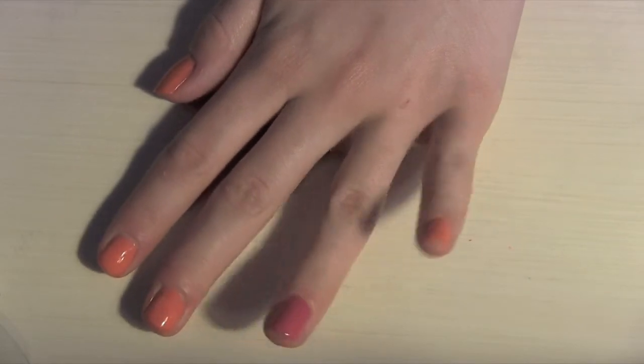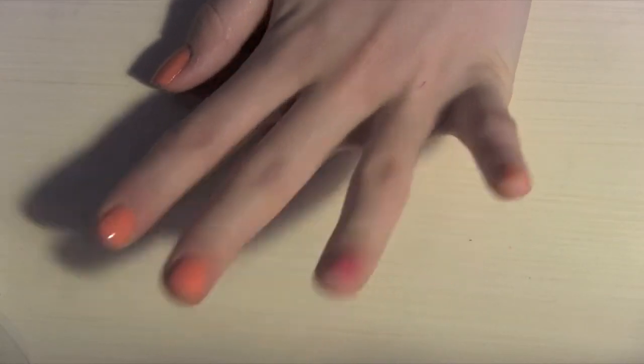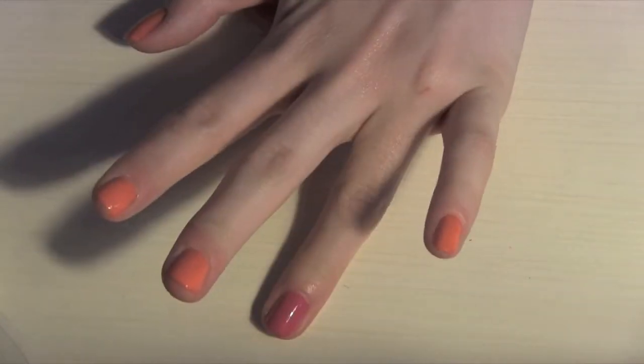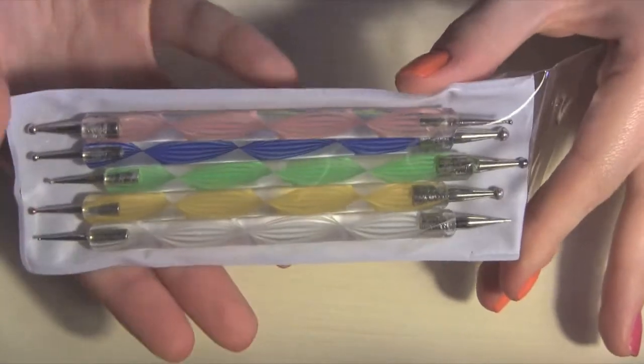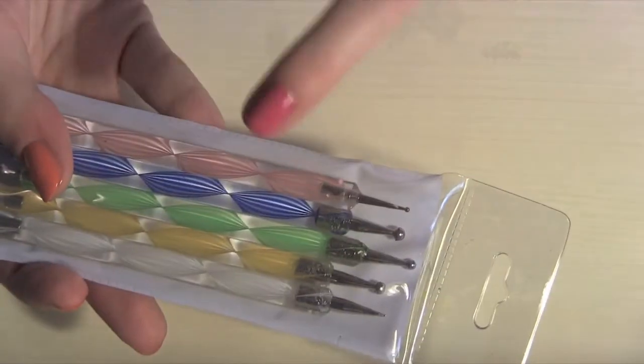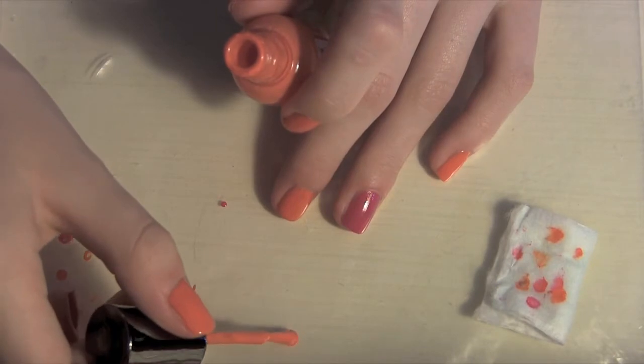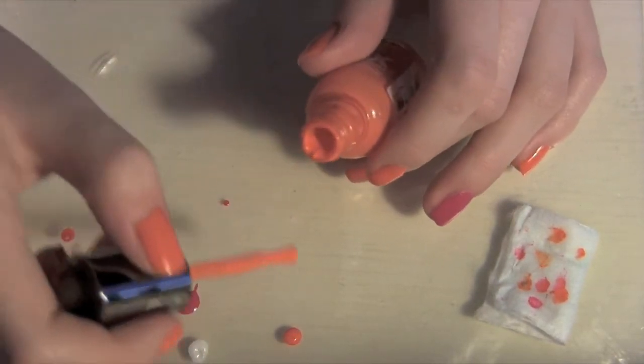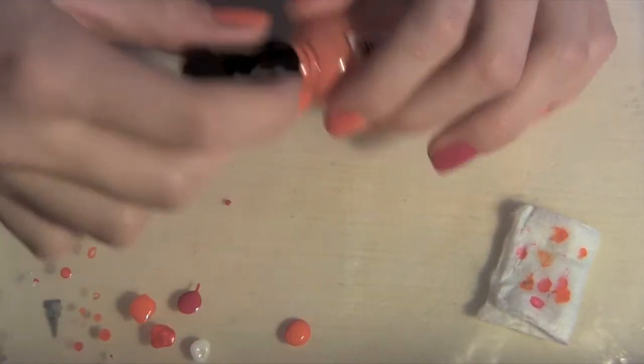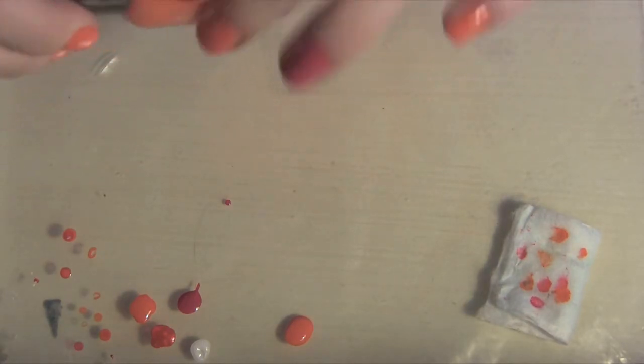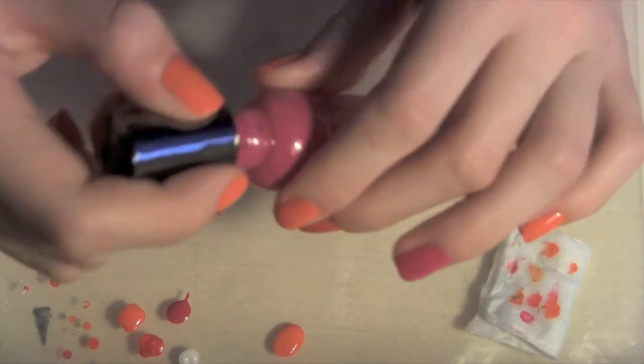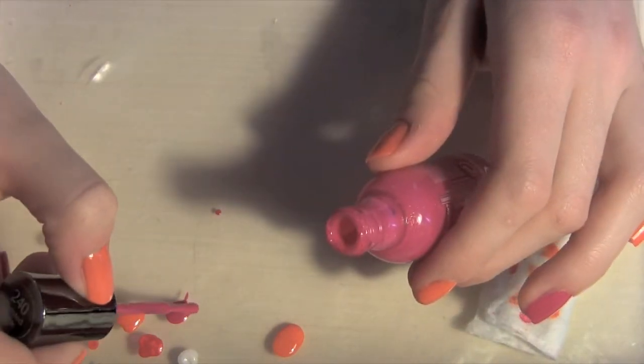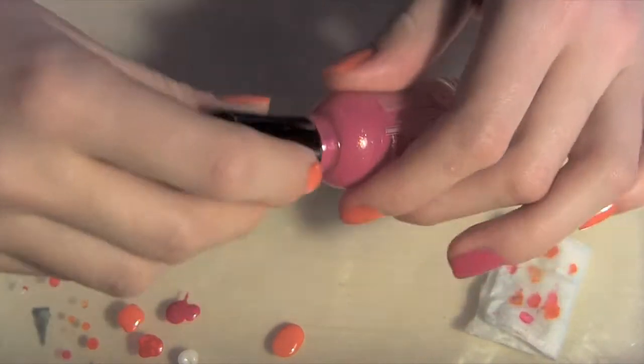Once all of your nails are dry, you're going to start with your ring finger or accent nail, whatever you would like to use. You're going to need either some dotting tools or something to create little dots on your nails. I'm going to dot a little bit of this orange, and you want to make sure that there's a good amount of polish on there so that it doesn't dry really quickly. I'm also going to take a little bit of pink on there.